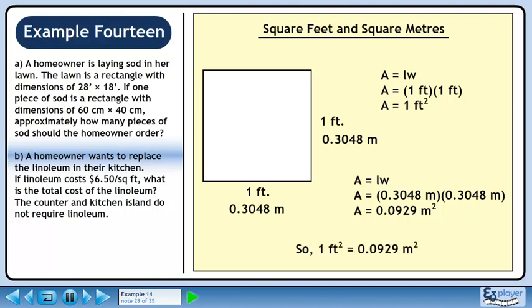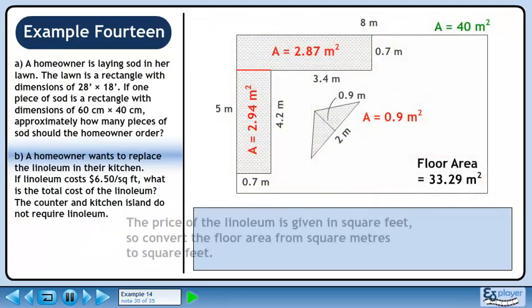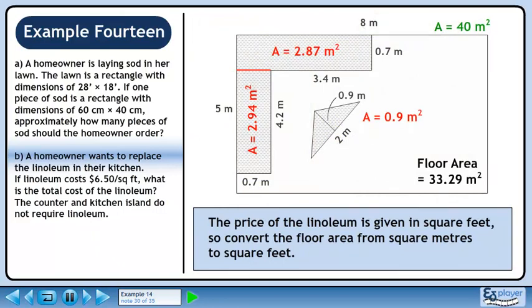So, 1 square foot equals 0.0929 square meters. The price of the linoleum is given in square feet, so convert the floor area from square meters to square feet.